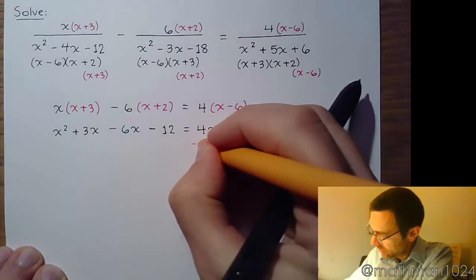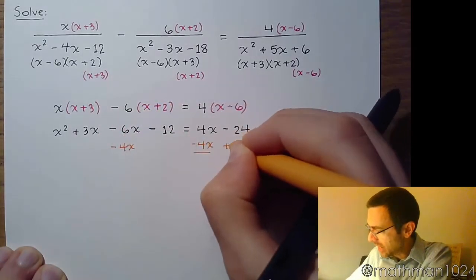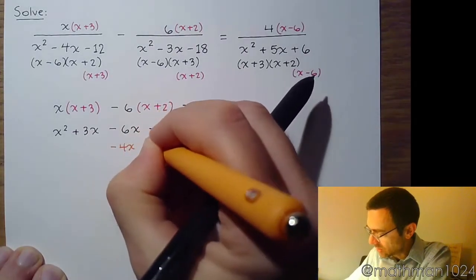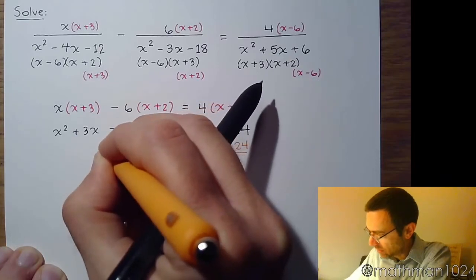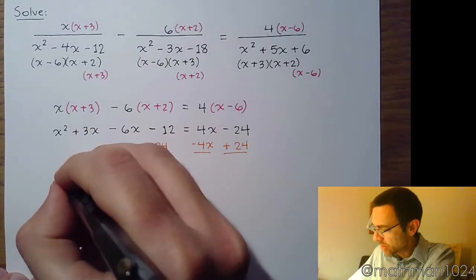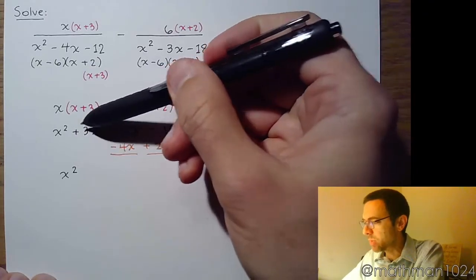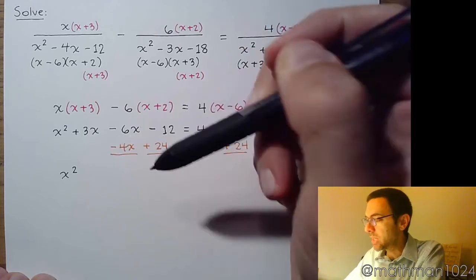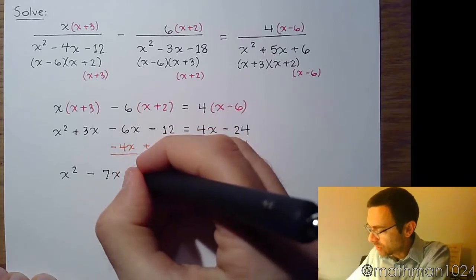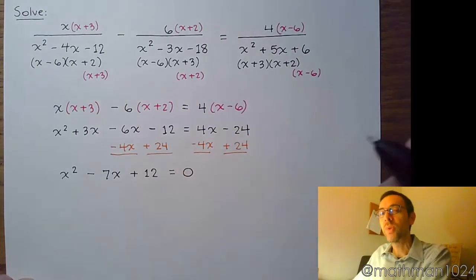We are going to move 4x, subtract 4x on both sides, and we need to add 24 on both sides. So we have x squared, we've got 3x minus 6x minus 4x, so 3 minus 6 is negative 3, negative 3 negative 4 is negative 7x. Negative 12 and positive 24 is positive 12. So we have x squared minus 7x plus 12 equals 0.